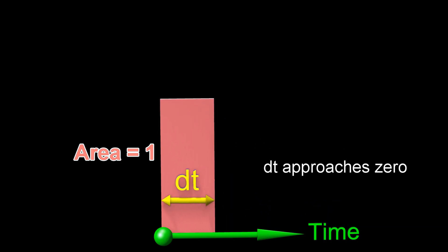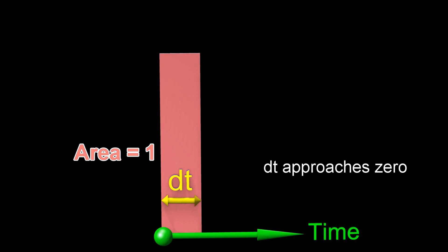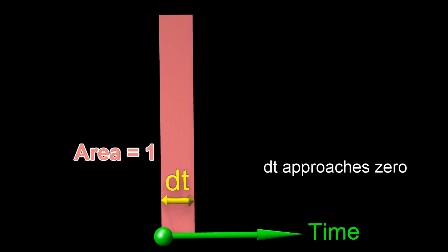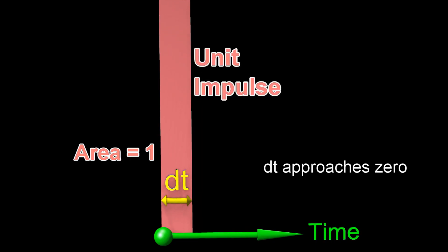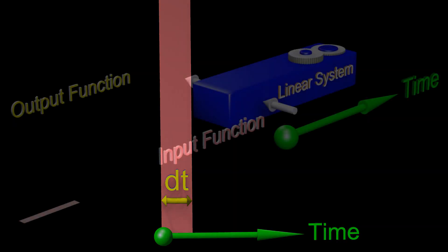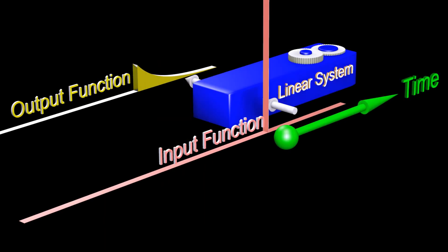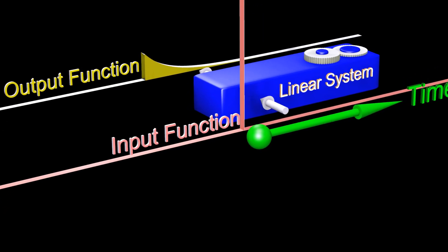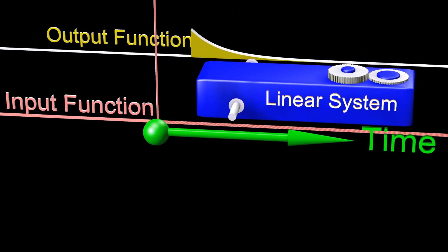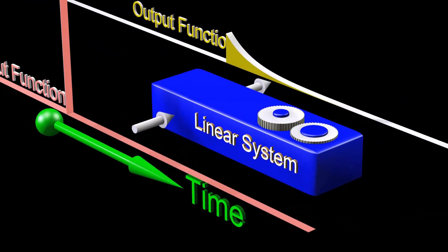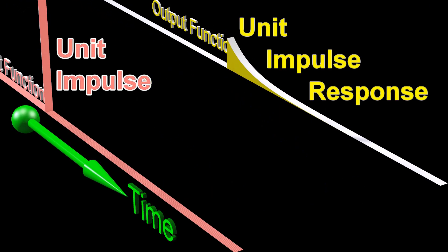Since the area of the pulse must equal one, as the width becomes very small, the height becomes very large. If this unit impulse is the input to our system, then we call the output of the system the system's unit impulse response.